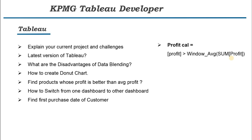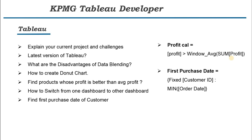The next question is: find the first purchase date of customers. Let's say we have data where a customer places multiple orders, but we need to find when this customer was first registered or made their first purchase. For this, we can use a Fixed LOD calculation — we fix on Customer ID and then find the MIN of Order Date. Based on this, you can find out the first purchase date of each customer.